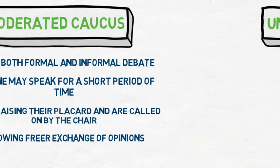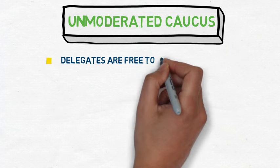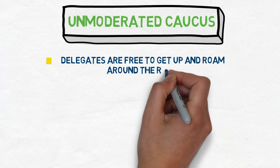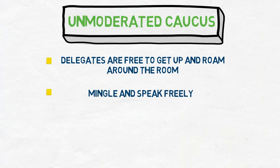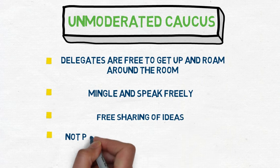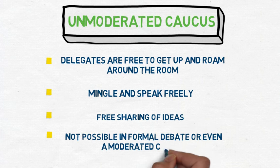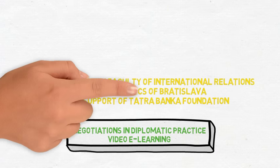The second type of caucus is an unmoderated caucus, when delegates are free to get up and roam around the room to mingle and speak freely. This enables the free sharing of ideas to an extent not possible in formal debate or even a moderated caucus. The session will switch between formal debate, moderated caucus, and unmoderated caucus until draft resolutions are complete, merged, and ready to be presented.